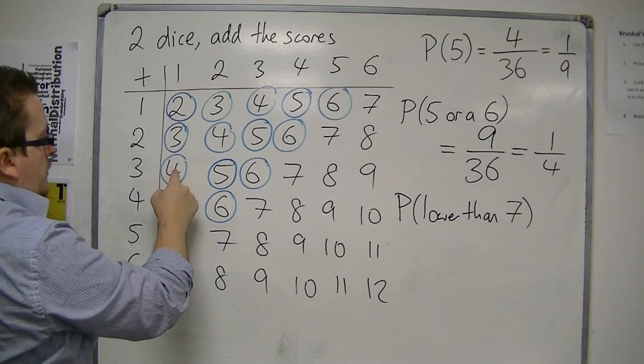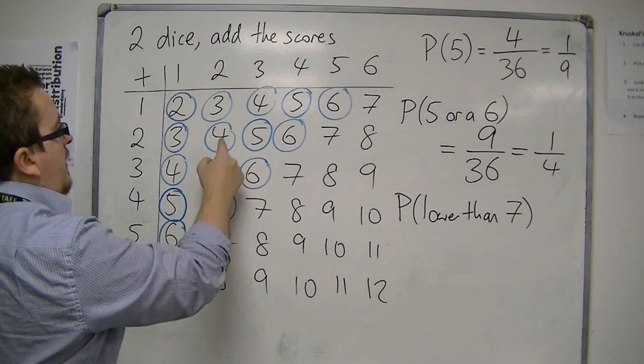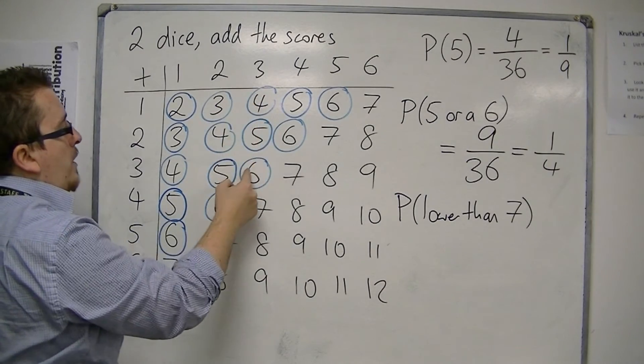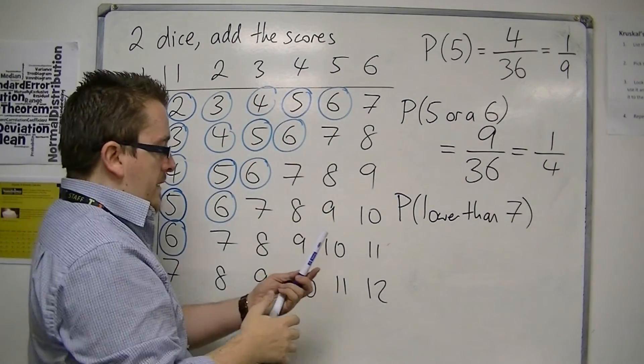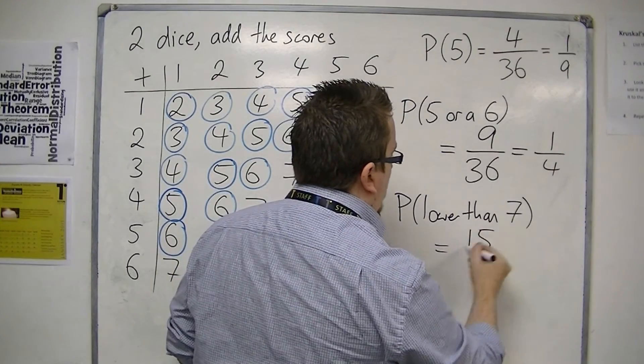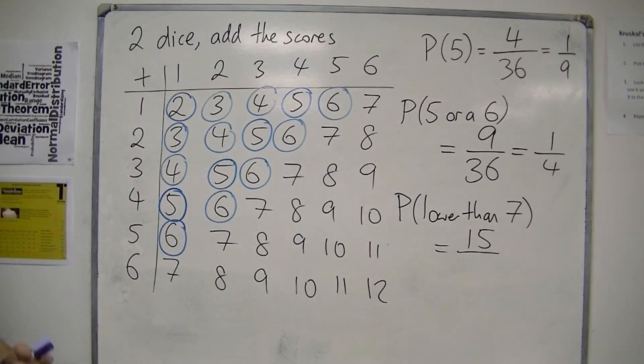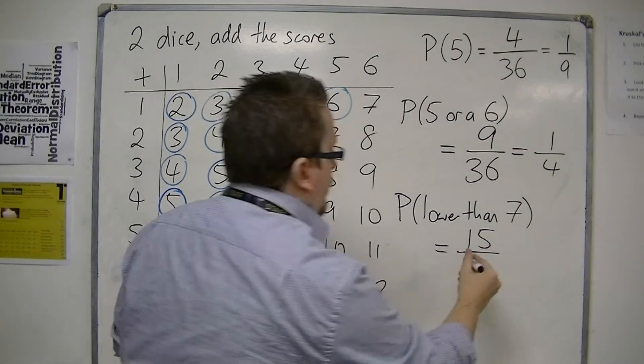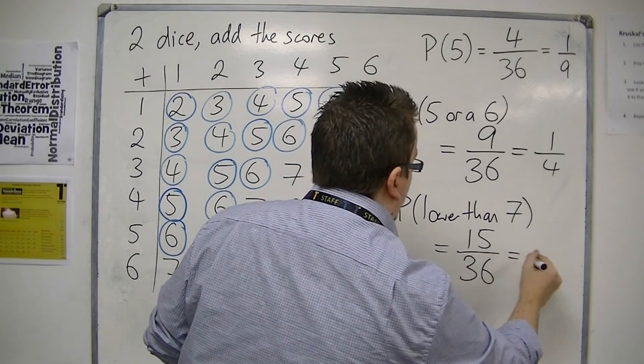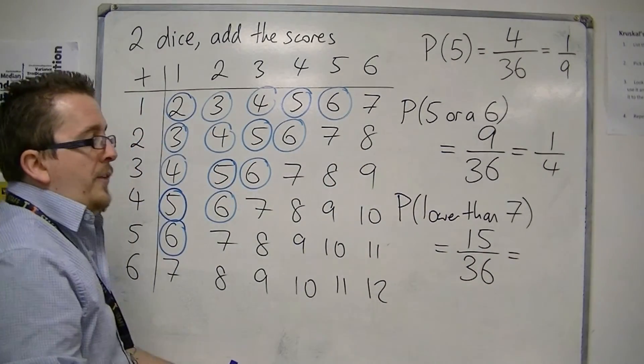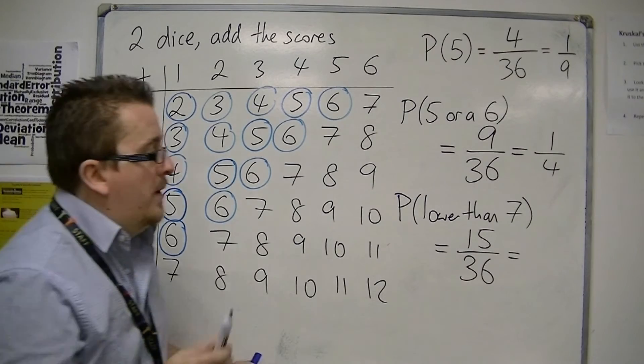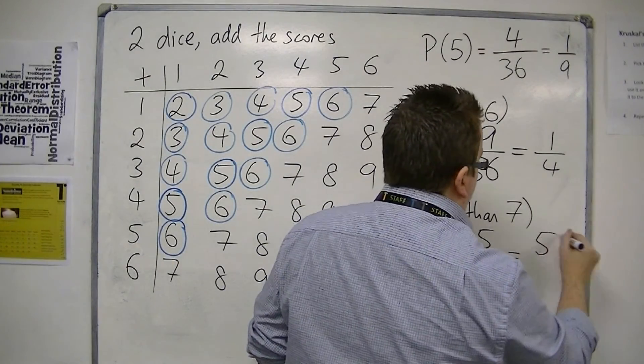So we have one, two, three, four, five, six, seven, eight, nine, ten, eleven, twelve, thirteen, fourteen, fifteen. So there's actually fifteen ways of getting a number less than seven out of thirty-six. That can be simplified again—divide top and bottom by three—and you get five-twelfths.